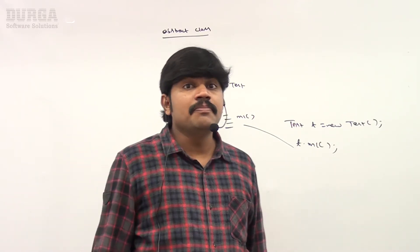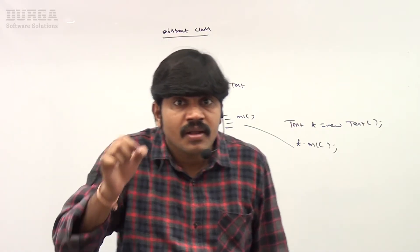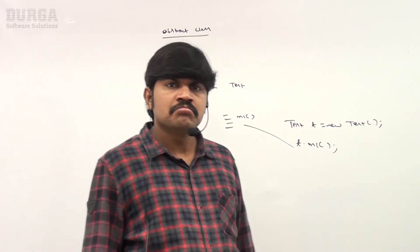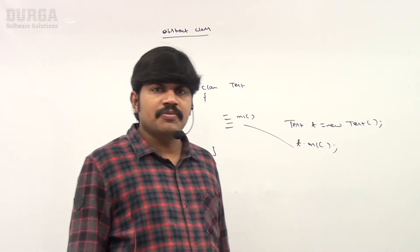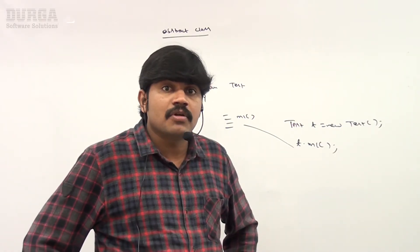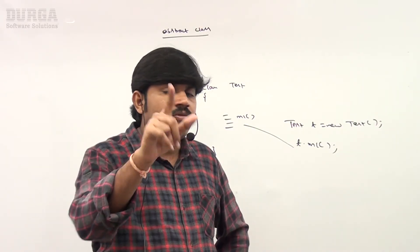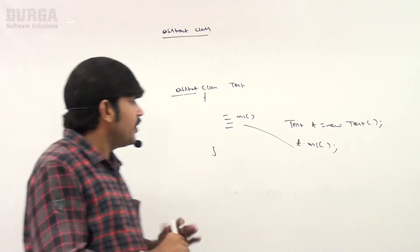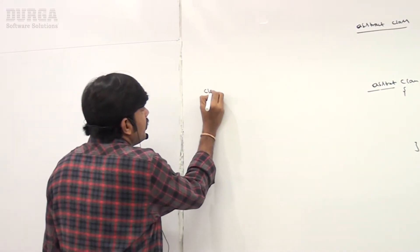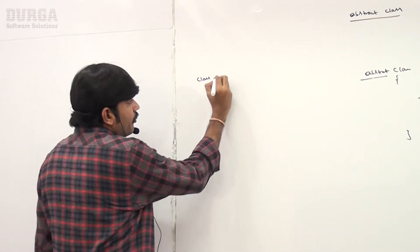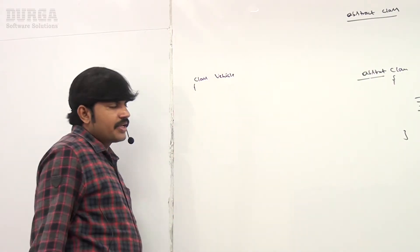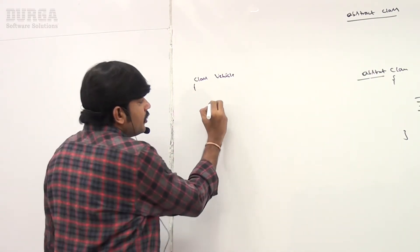Is it possible to create an object for an abstract class? Not possible. The reason is very simple. Suppose I have a class Vehicle. That Vehicle class contains an abstract method: public abstract int getNumberOfWheels().